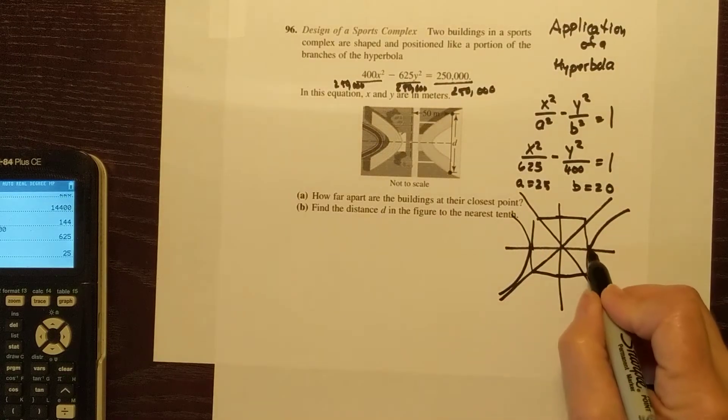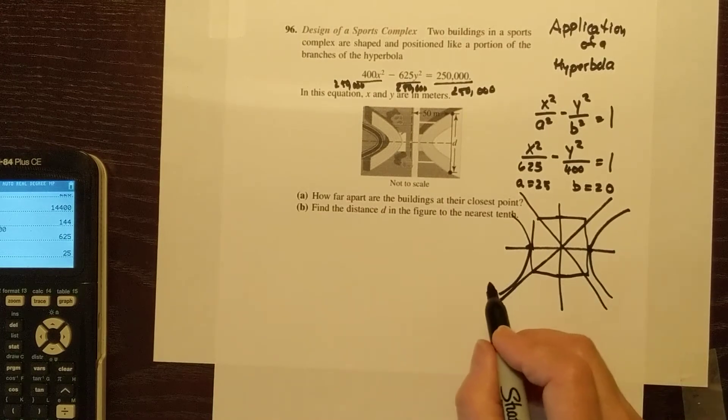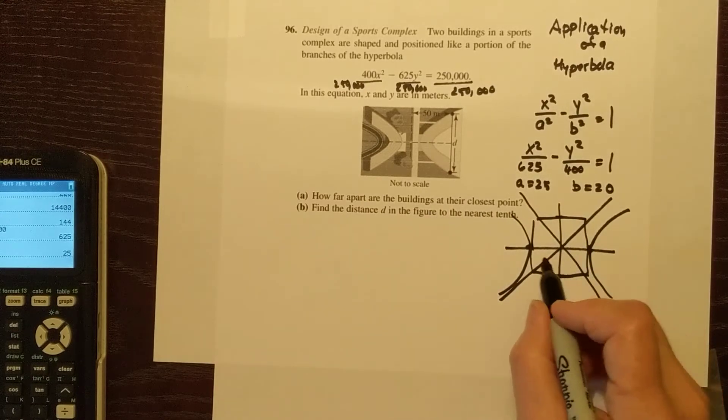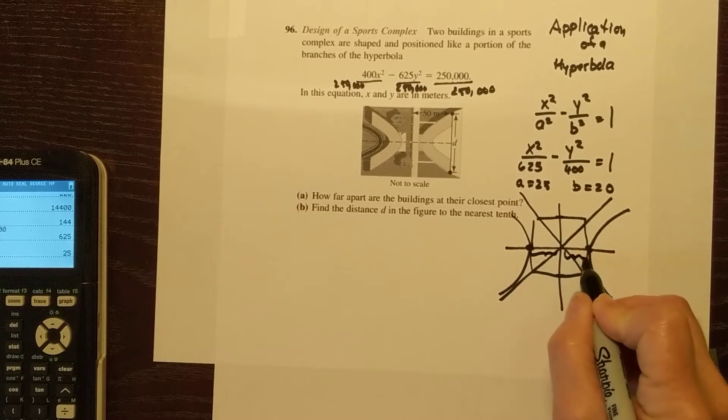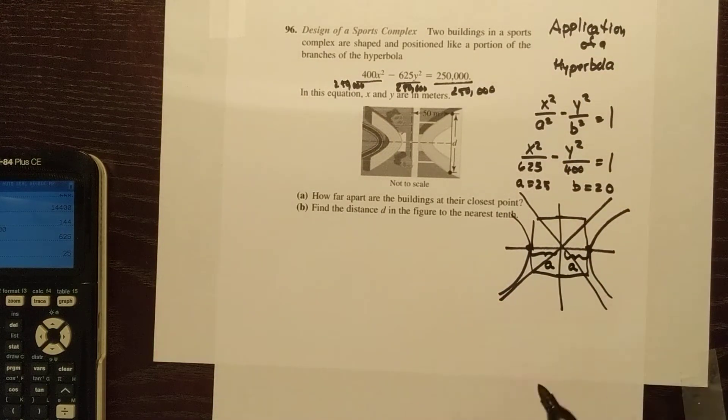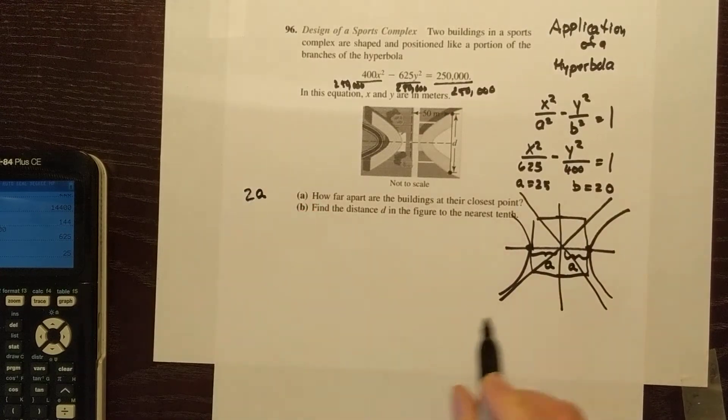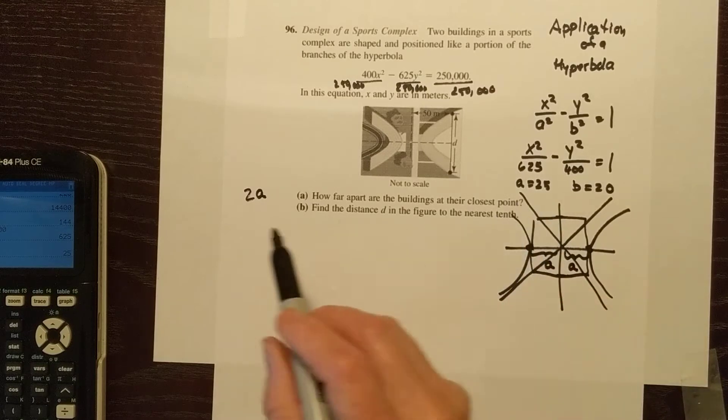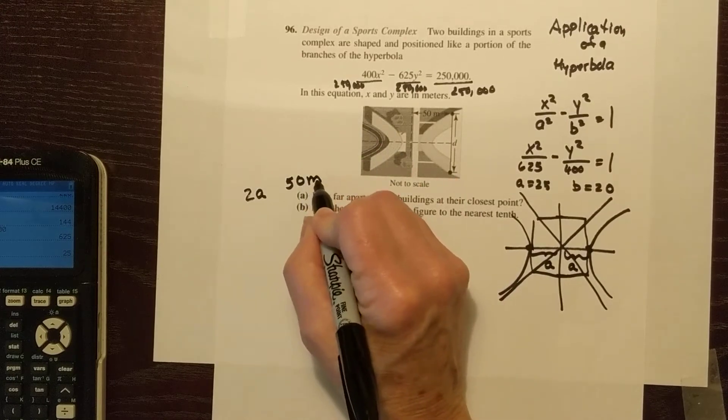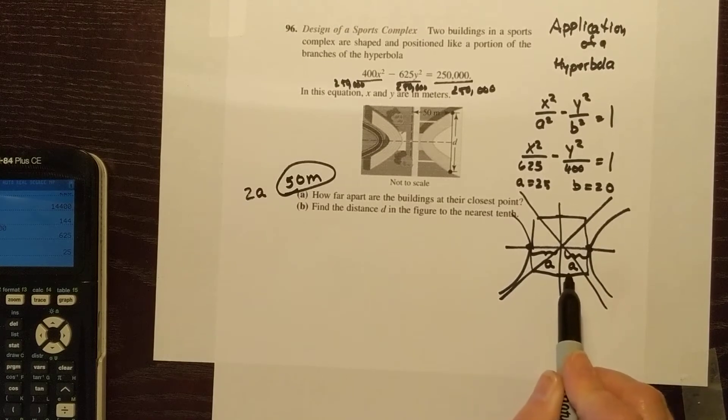So these are the vertices, right? And everything lies in line with the vertices. It says how far apart are the buildings at their closest point. At their closest point, this would be the closest point from here to here. So this is the horizontal distance, so that's a and that's a. So the closest they will ever be is a plus a, or 2 times a. We figured out that a is 25, so 2 times a is 50. They say that X and Y are in meters, so 50 meters is the closest these two buildings will ever be from each other.